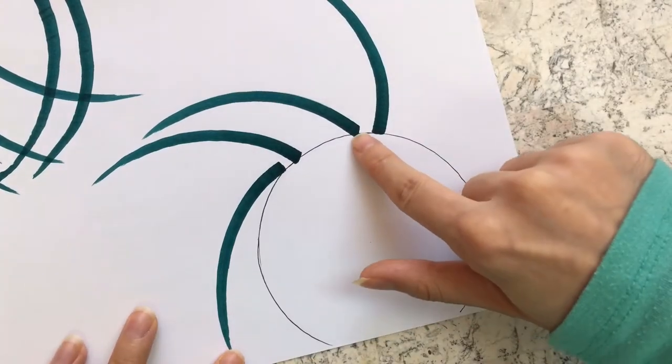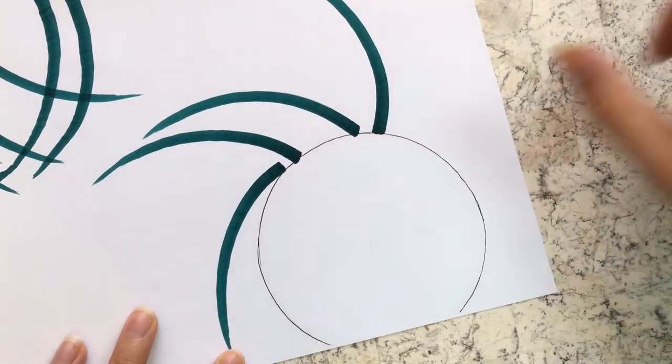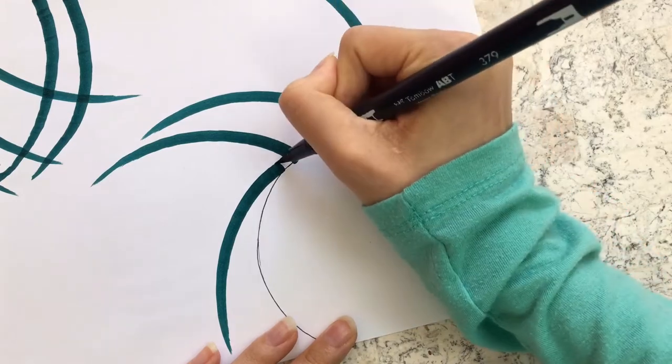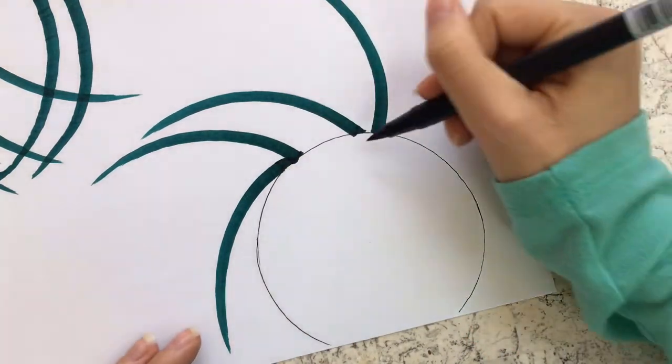Once you've drawn the spokes of the pinwheel you can feel free to leave them as they are or you can color in the space between the spokes and the circle to give it a smoother look.